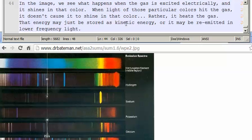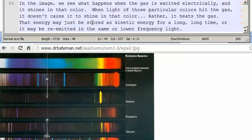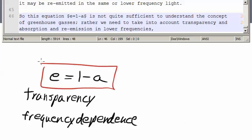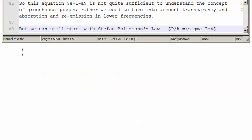That energy may just be stored as kinetic energy for a long, long time. Or it may be remitted in the same or lower frequency light. So this equation, e equals 1 minus a, is not quite sufficient to understand the concept of greenhouse gases. Rather, we need to take into account the transparency and the absorption and re-emission in lower frequencies. But we can still start with Stefan Boltzmann's law.